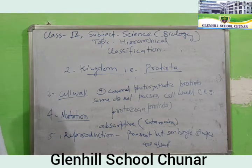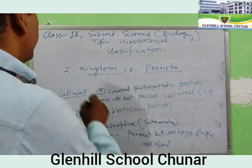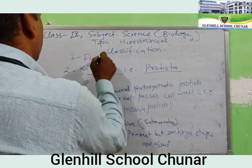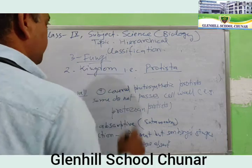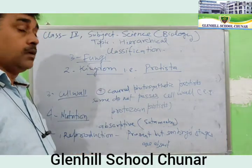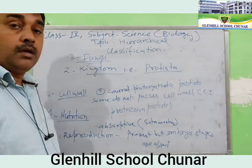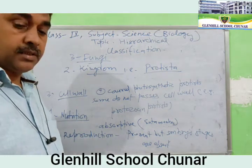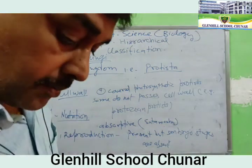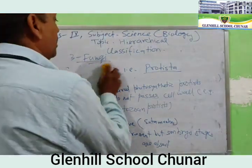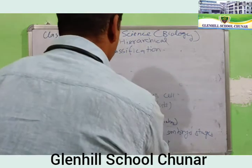The third kingdom is Fungi. Fungi are eukaryotic organisms. They get their food from dead and decaying organic matter.